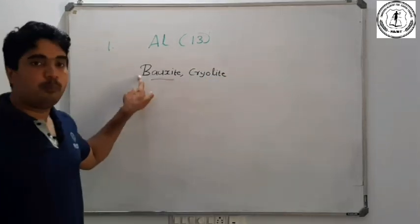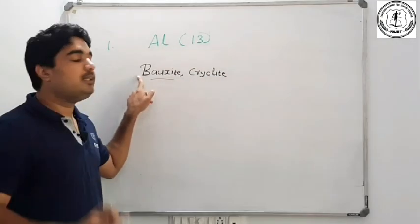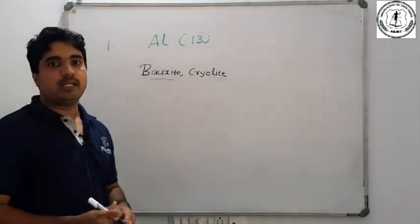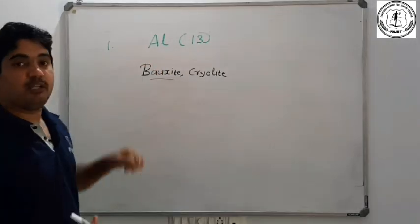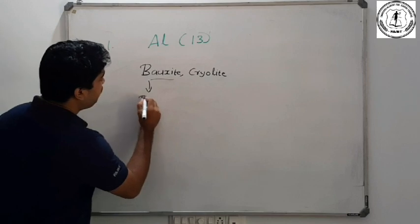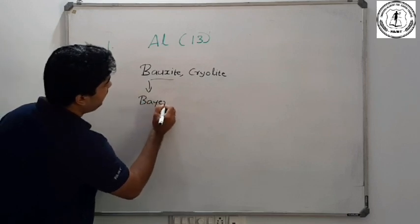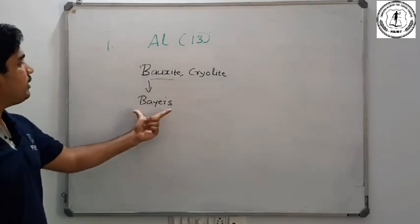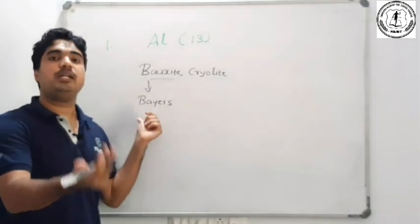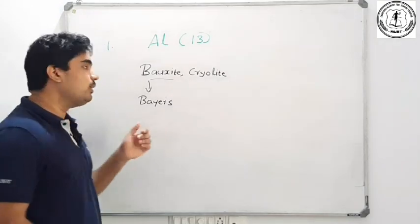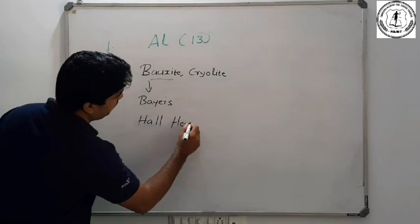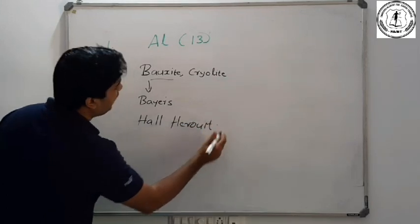The symbol is Al, and one of its ores is cryolite. Aluminium is extracted using the Bayer's process.